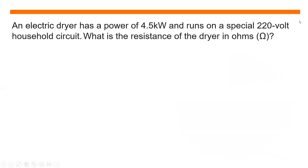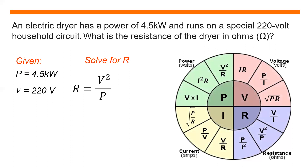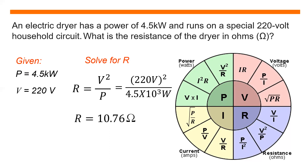An electric dryer has a power of 4.5 kilowatts and runs on a special 220 volt household circuit. What is the resistance of the dryer in ohms? Given: power equals 4.5 kilowatts, V equals 220 volts. Solving for resistance: R equals V squared over P, that is 220 volts squared divided by 4.5 times 10 raised to 3 watts. We get 10.76 ohms.